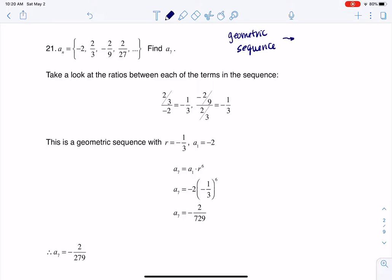Now anytime I have a geometric sequence, I want to find that common ratio and I want to find a_1. Those are always really just two good numbers to have when you're running through these problems. But I can see a_1 right here, it's negative 2. That's great.